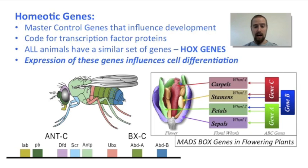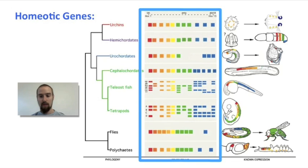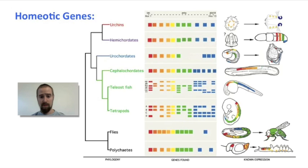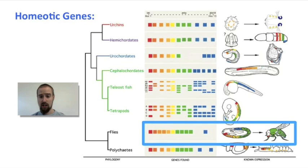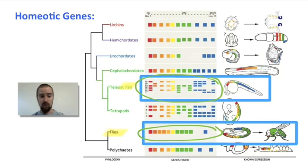Cells that make up the flower's petals express both genes A and B, and cells that make up the flower's stamens express both genes B and C. Whether we're talking about plants or animals, these homeotic genes play a huge role in guiding cell differentiation. All animals have fundamentally similar homeotic genes called hox genes. Both fruit flies and fish have hox genes, but the specific number and configuration of these genes differs. As you can see, the fish and the fly have all the same colors, meaning they have all the same hox genes. But the fish has many more copies of and variations on these genes, and these variations mean that fish develop differently than flies as a result, and end up looking differently at maturity.